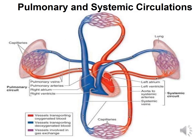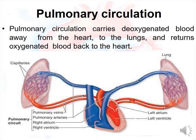In this picture, we can compare and contrast pulmonary and systemic circulations. The pulmonary circuit consists of the pulmonary veins, pulmonary arteries (right and left), right atrium, and right ventricle. The systemic circuit consists of the left atrium, left ventricle, aorta, and systemic veins. Red-colored vessels carry oxygenated blood, blue-colored vessels carry deoxygenated blood, and violet-colored vessels are involved in gas exchange.